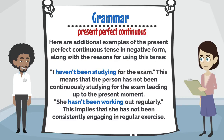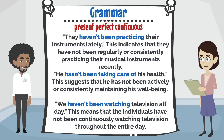Here are additional examples of the present perfect continuous tense in negative form. She hasn't been working out regularly — this implies that she has not been consistently engaging in regular exercise. They haven't been practicing their instruments lately — this indicates they have not been regularly practicing their musical instruments recently. He hasn't been taking care of his health — this suggests he has not been actively maintaining his well-being. We haven't been watching television all day — this means they have not been continuously watching television throughout the entire day.